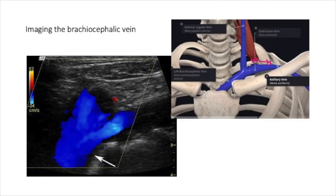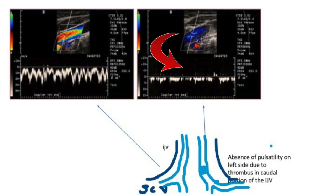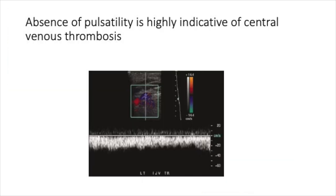It is always a good habit to document the cranial-most portion of the brachiocephalic vein in your scans. Here is the anatomical representation of the internal jugular and subclavian joining to form the brachiocephalic vein, and exactly the same thing is shown in the color Doppler image. On the right you have a completely patent neck venous system showing typical pulsatility, whereas on the left you can see a thrombus occluding the IJV, and when you sample the cranial portion of the IJV you see loss of pulsatility, because the thrombus is not allowing cardiac pulsations to be transmitted through into the proximal vessel. Absence of pulsatility is thus highly indicative of central venous thrombosis.